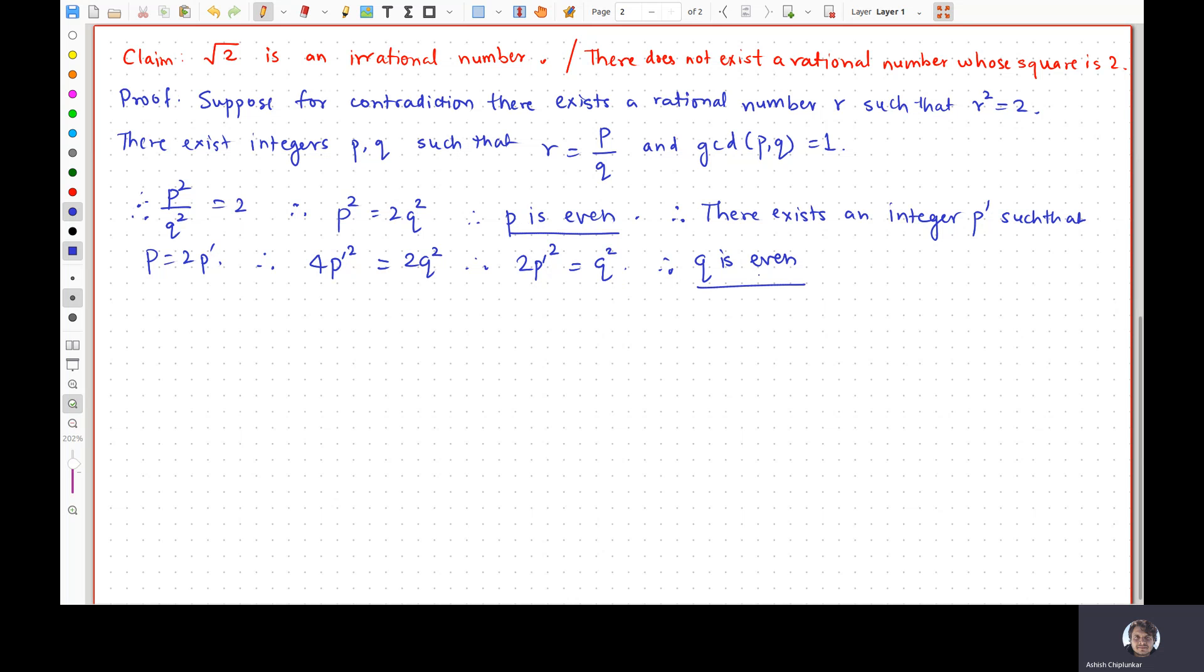Now, both P and Q are even. So what does that mean? Therefore, GCD of PQ is definitely not equal to 1, it is at least 2. So this is a contradiction. We assumed that the GCD of P and Q is 1, but now we are getting a statement which says the GCD of P and Q is not equal to 1. Both cannot be true simultaneously. So by assuming the opposite of whatever we wanted to prove, we are ending up with some absurd statement, some completely nonsense statement.